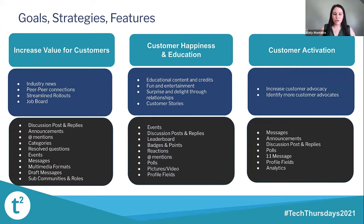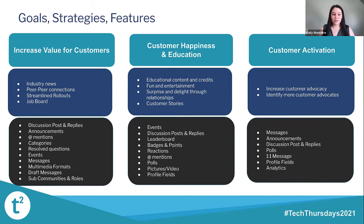Looking at our goals and strategies, we really wanted to increase value for our customers — providing things like industry news and peer-to-peer connections, whether that's networking campaigns, mentorship opportunities, or everyday conversation. We also wanted streamlined rollouts of our product and feature releases, and we created a job board to help them find career satisfaction. We're able to do this with a lot of the functionality in Vanilla — most importantly the categories and different forums. Educational credits are super important for our audience, and for them to be able to get them for free is a huge deal.